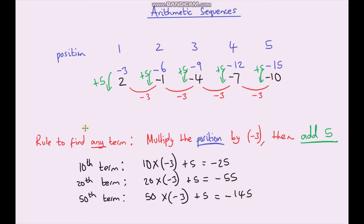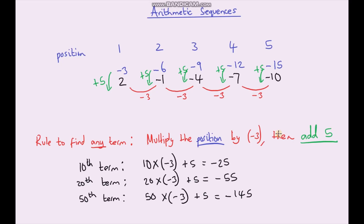Hopefully you found that video useful and it gave you an introduction into finding the rule to find any term in an arithmetic sequence. Usually there are two steps involved: the first step is to multiply your position by some number — and that number is just the common difference between each term — and then secondly make the adjustment, either adding or subtracting a number to go from your times table to your sequence. In the next video we're going to use algebra and condense this into something called the nth term, which is exactly the same idea but written using algebraic notation. Okay, take care guys, thanks a lot.